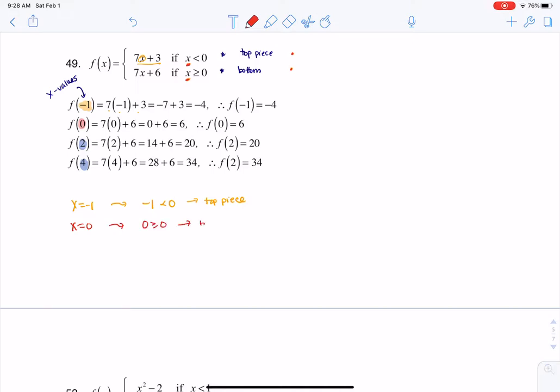And here, we would say 0 is greater than or equal to 0. So this is actually telling me, hey, go bottom piece. And then when I head to the bottom piece, I'm plugging into 7x plus 6, so that's why you see 7 times 0 plus 6, and I get 6 back out.